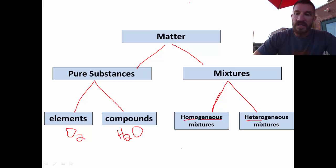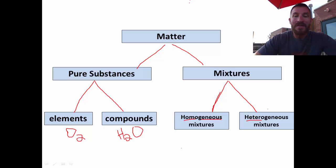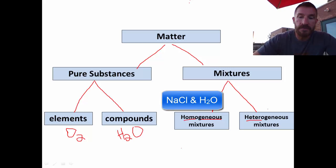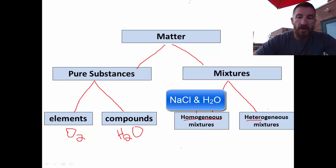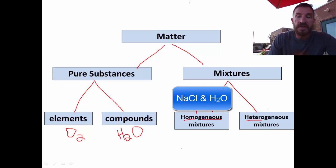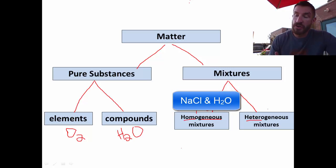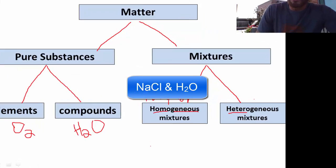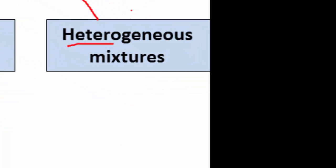Homogeneous mixtures are uniform throughout, while heterogeneous mixtures are not uniform throughout or have different phases. Note that pure substances are also uniform — always exactly the same — but homogeneous mixtures are uniform only within the sample. For example, a mixture of salt and water where all the salt dissolves is a homogeneous mixture. You could have different salt concentrations — a 1% or a 0.5% salt solution — unlike a compound which is always the same. Heterogeneous mixtures occur when you have different phases; for example, if you added so much salt that it would not dissolve, that produces different phases, giving you a heterogeneous mixture.